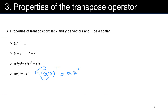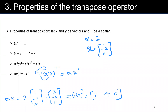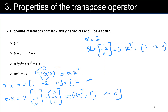Let's see one example for the scalar transpose property. Let alpha = 2 and x = [1, -2, 0]. So alpha·x = 2·[1, -2, 0] = [2, -4, 0]. Then (alpha·x)ᵀ = [2, -4, 0] as a row vector. On the other hand, x transpose is [1, -2, 0] as a row, and alpha times xᵀ = 2·[1, -2, 0] = [2, -4, 0]. As you can see, these two results are the same.